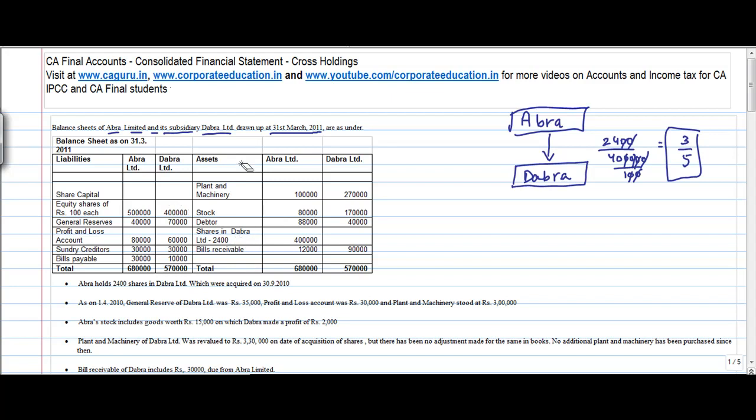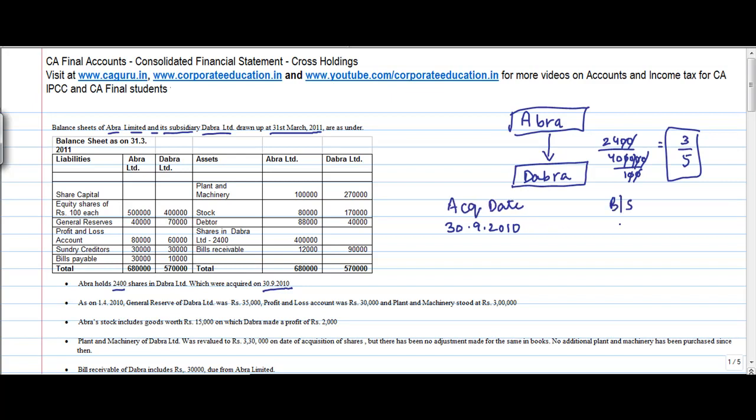Then I have bill receivable, bills payable, sundry creditors, profit and loss account, general reserve and share capital. Abra holds 2400 shares in Dabra Limited which were acquired on 3-9-2010. So 3-9-2010 is when the acquisition happened, so acquisition date. And the balance sheet date is 31-3-2011. So there is a difference of 6 months here.